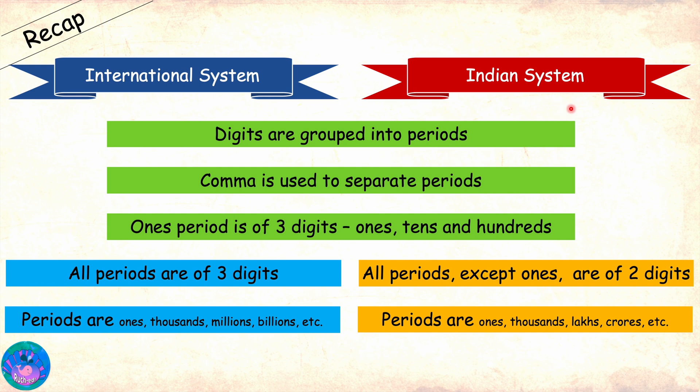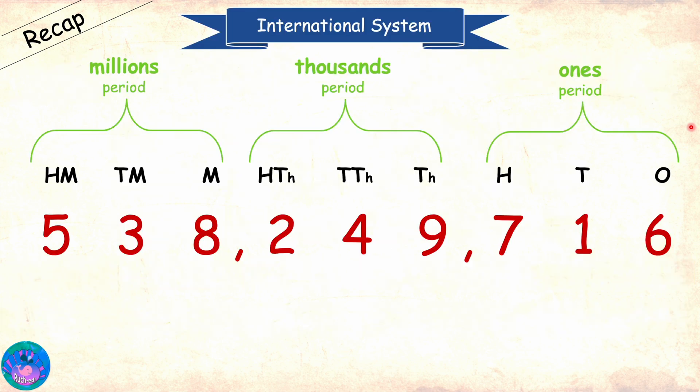In both systems, digits are grouped into periods and each period has a name. We separate the periods by putting a comma in between and while reading the numbers, we read one period at a time, starting from the leftmost one. I also learned the international system.